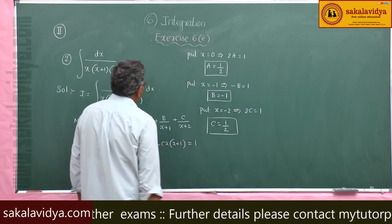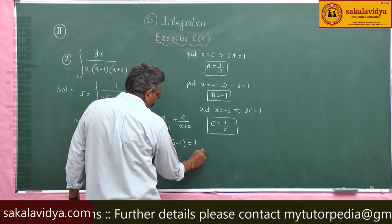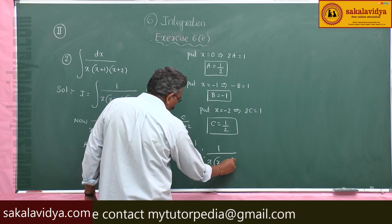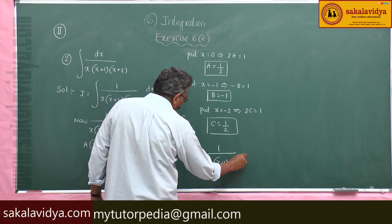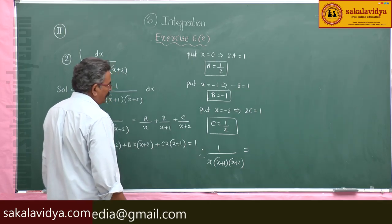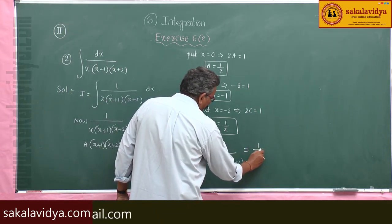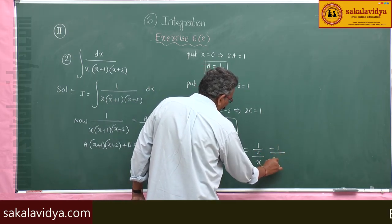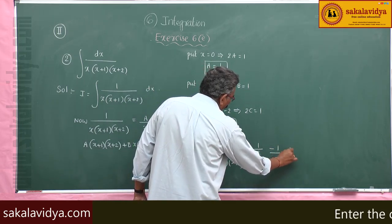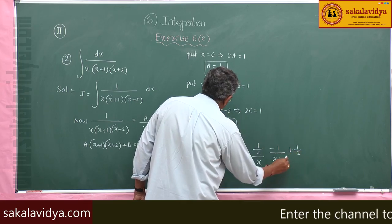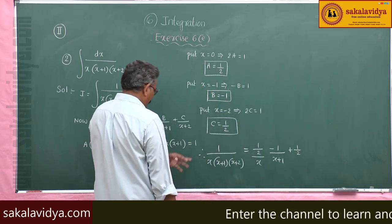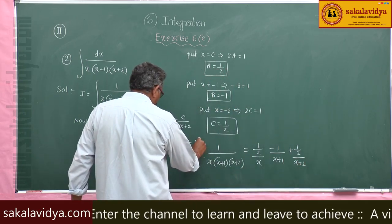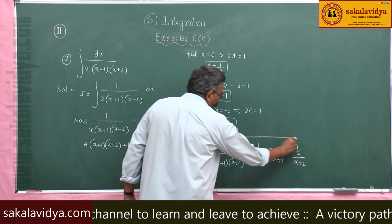Therefore, the partial fractions of 1 over x(x+1)(x+2) are: (1/2) over x, minus 1 over (x+1), plus (1/2) over (x+2). These are the partial fractions.